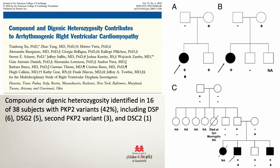I'm going to go through a few examples in the channelopathy and cardiomyopathy world. The first is arrhythmogenic right ventricular cardiomyopathy. This paper from 2010 looked at a relatively small number of patients with ARVC that met task force criteria. In 38 subjects that had PKP2 variants, 16 of them — nearly half — actually had a second hit in either a different related gene or sometimes in the same gene, PKP2. So nearly half of their cohort actually had two variants.